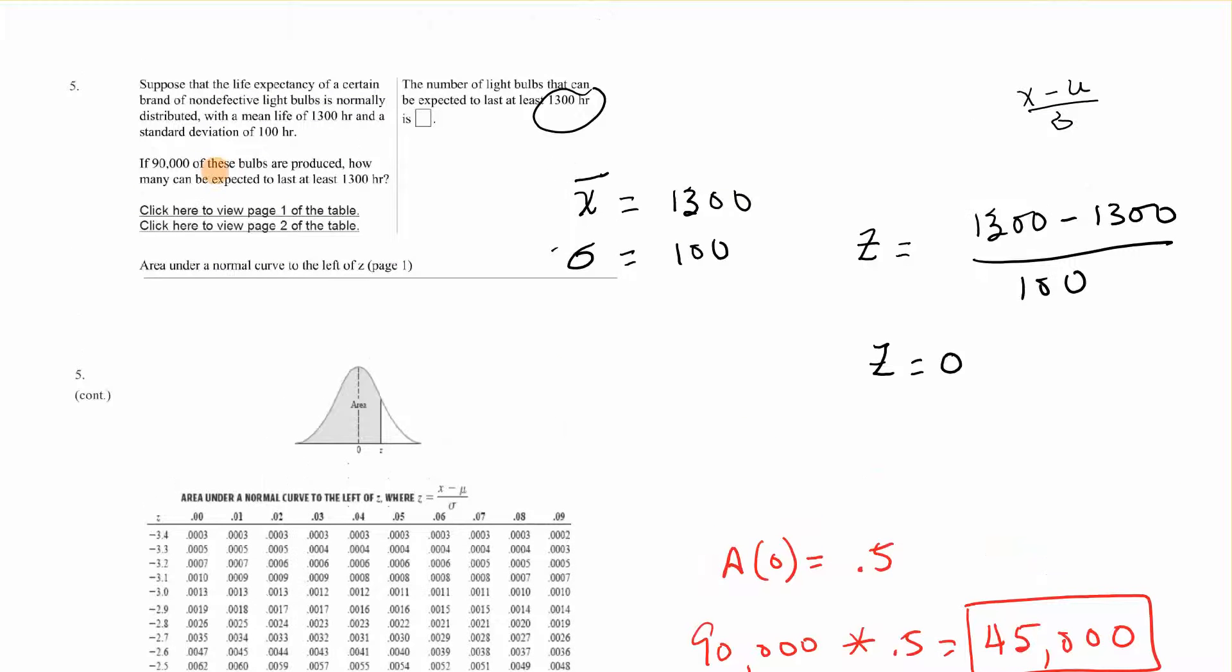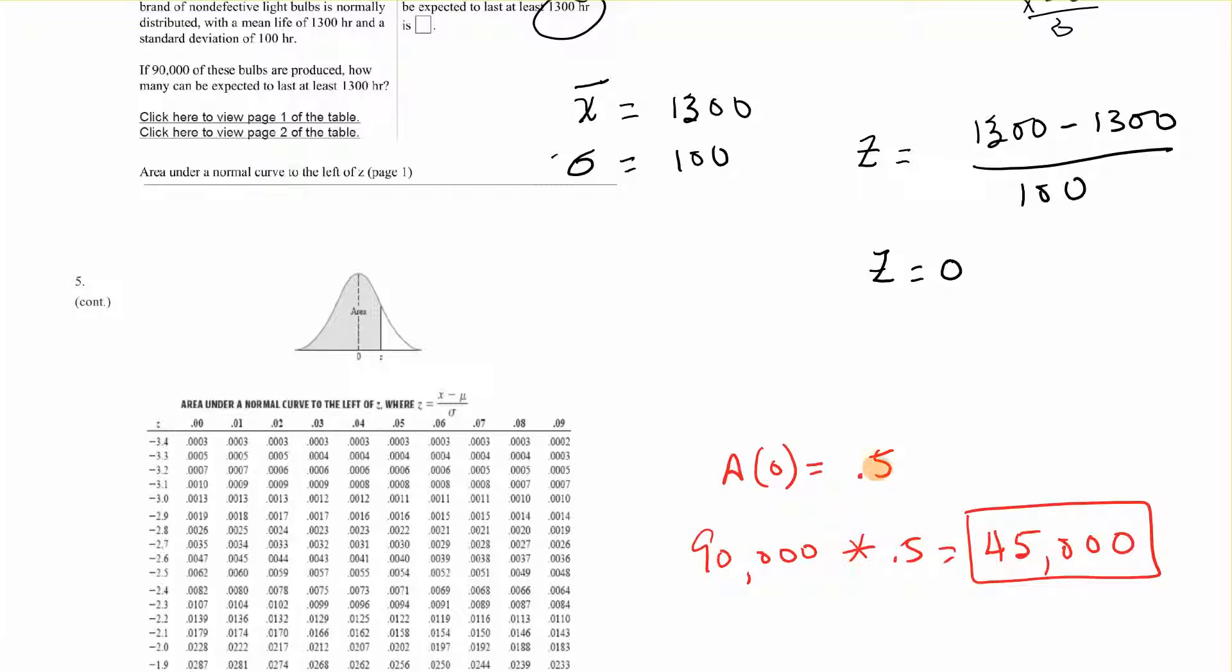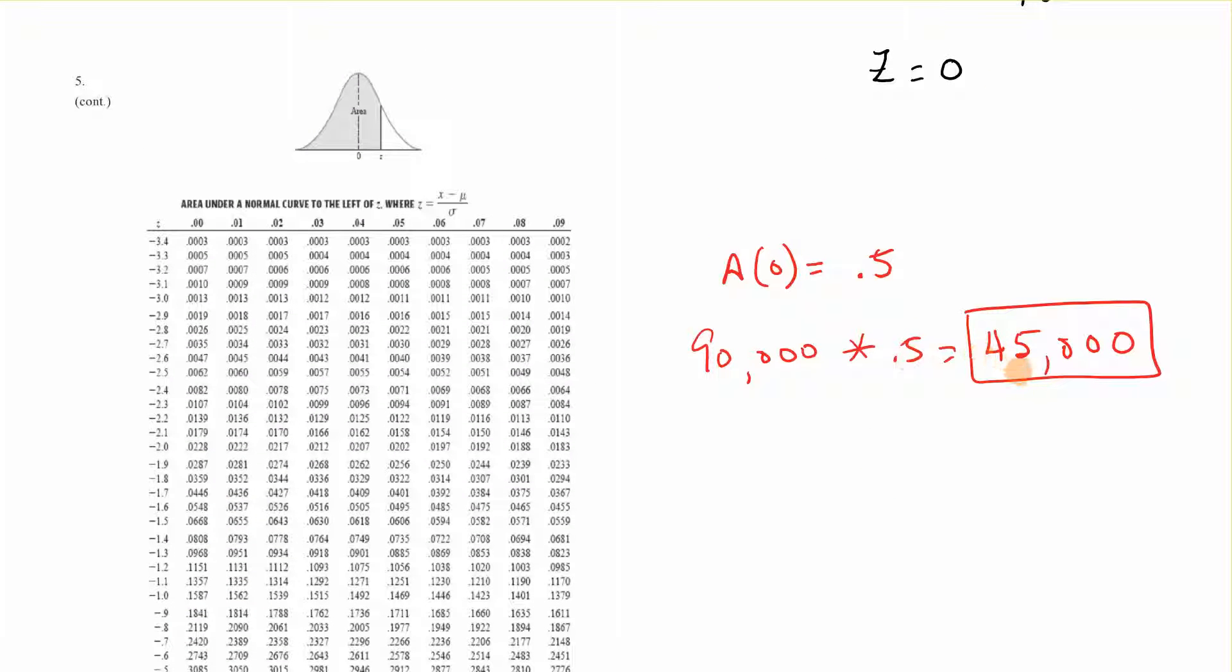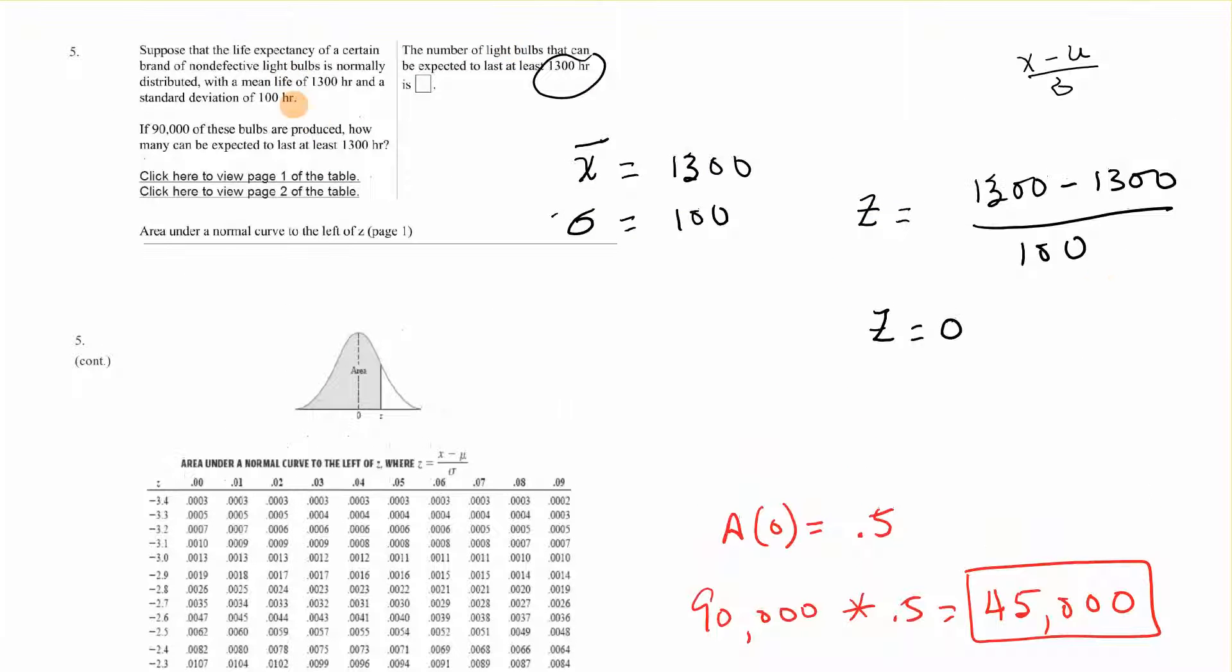If 90,000 of these bulbs are produced, how many can be expected to last at least 1,300 hours? 90,000 times the 0.5 that we found when we used a z-score of 0. The area under the curve would be 0.5, and we multiplied 90,000 times 0.5, and we got 45,000, which is our answer. We used the numbers we were given to get our z-score. We did x minus the mean over the deviation, that gave us 0. A z-score of 0 gave us an area of 0.5. We multiplied that by 90,000 and got 45,000.